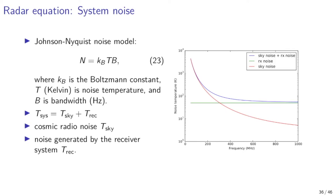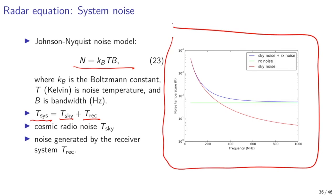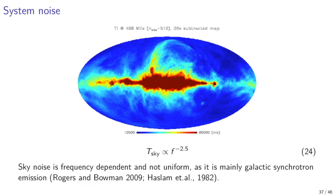We can model the system noise of an incoherent scatter radar as a sum of sky noise (noise of cosmic origin) and receiver noise generated by the radar's radio receiver. The figure shows a model of system noise as a function of frequency, including the variation of cosmic radio noise temperature and a fixed receiver noise temperature. Cosmic radio noise is primarily generated by galactic synchrotron emission; the main feature is our own galaxy. This is essentially what the sky would look like at 408 MHz. The cosmic radio noise is frequency dependent, as shown in equation 24.